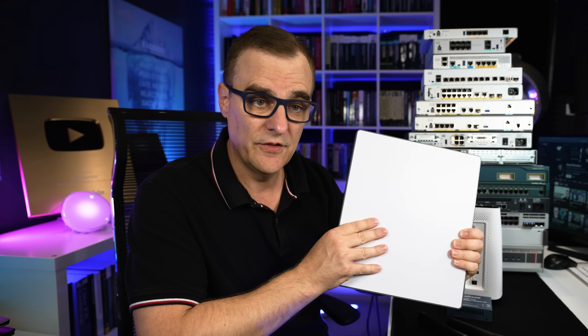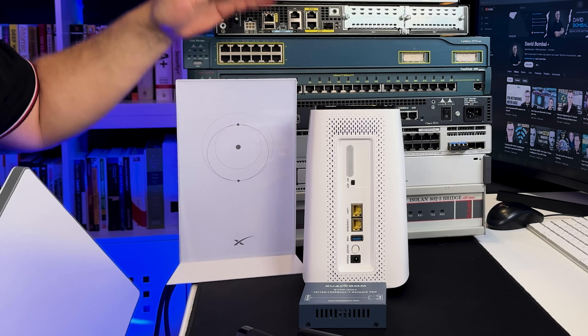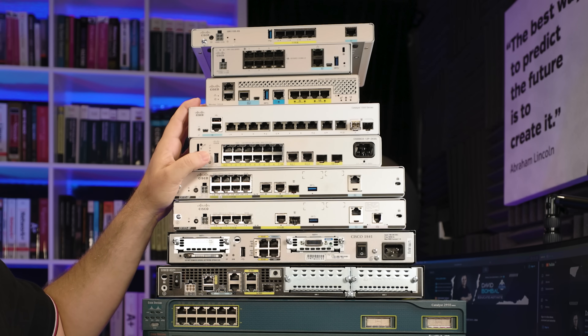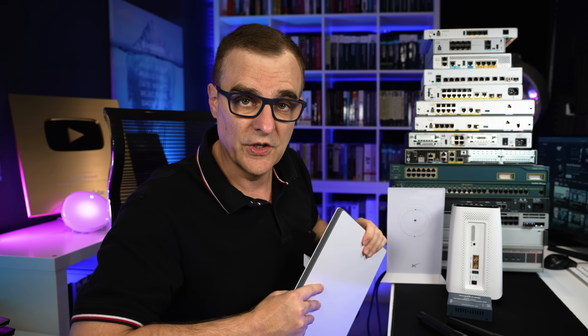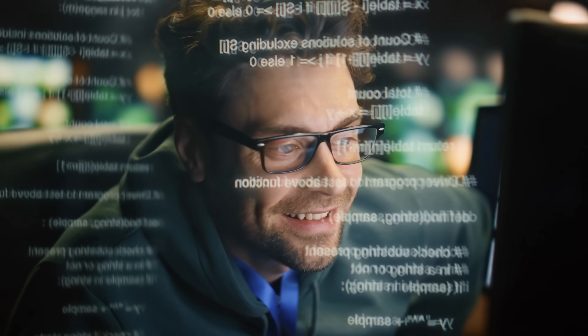The Starlink Mini really changes the game because you can access the internet using a portable satellite dish like this. It has a built-in router, and I'm going to explain what a router actually is — the differences between routers versus what a switch is and what a layer 2 and a layer 3 switch is. You're going to configure Cisco routers and switches to pass the CCNA exam and be successful in your career.